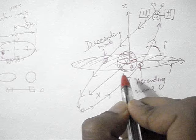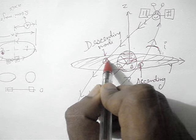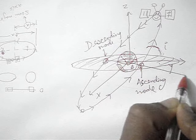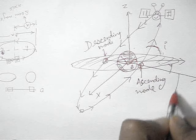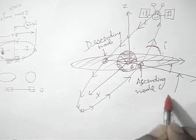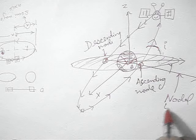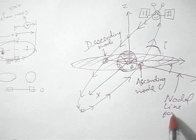Now if we join these two lines, then we have the nodal line for the satellite.